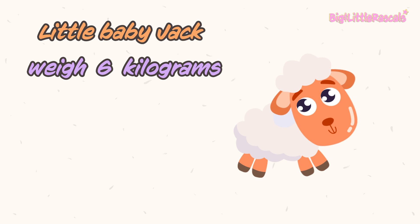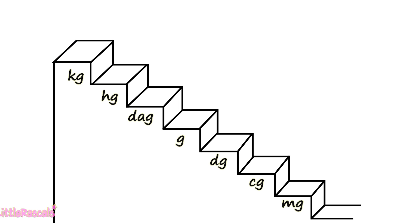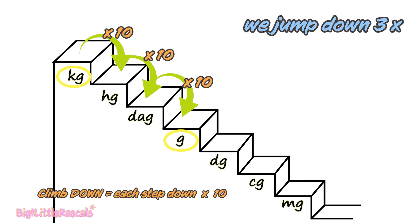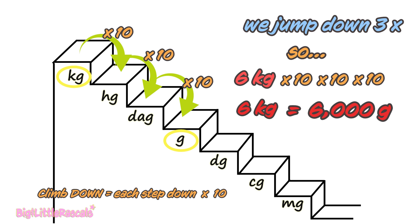Little baby Jack weighs 6 kilograms. How much does little baby Jack weigh in grams? 6 kilograms is equal to how many grams? First, find where kilogram is. There it is. Then find the gram. You need to jump down from kilogram to gram. As you are climbing down, each step you jump down, you multiply by 10. 1, 2, and 3 jumps. So 6 kilograms multiplied by 10, by 10, and by 10 — it gives you 6,000 grams. So 6 kilograms equals to 6,000 grams. Good job.